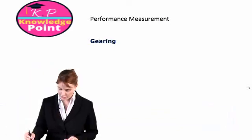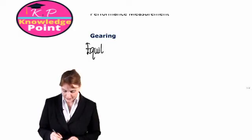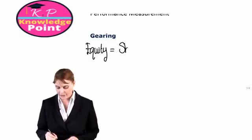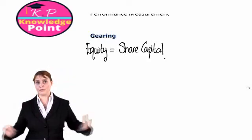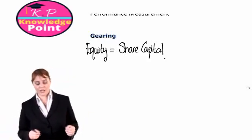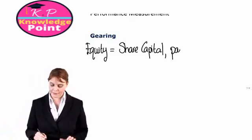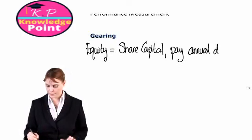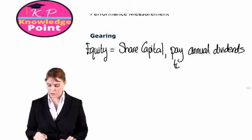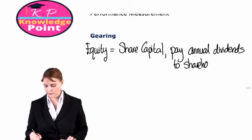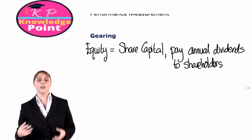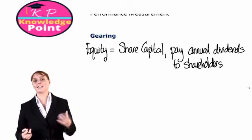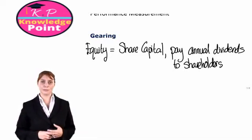Just a bit of terminology first. We can have equity financing, which is effectively share capital — we sell shares to a number of different people in the marketplace. If we have share capital, then we pay annual dividends to shareholders. Someone buys a share in our company and each year we will pay them a certain amount as a dividend, and that is the return they are getting for their investment in our company.